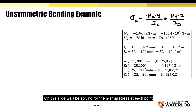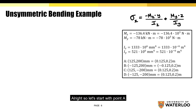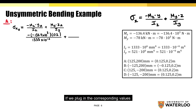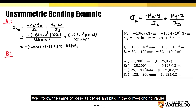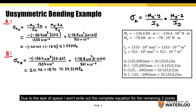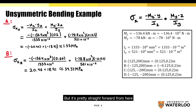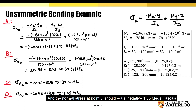On this slide we'll be solving for the normal stress at each point. I've included all the variables and corresponding values on the right, already converted to newtons and meters. Starting with point A, plugging in the corresponding values gives 1.55 MPa. For point B, following the same process gives 39.37 MPa. For point C the normal stress equals negative 39.37 MPa, and the normal stress at point D equals negative 1.55 MPa. Now that we've solved for the normal stress at each point, we can move on to the second part of the question.